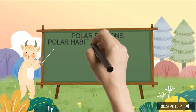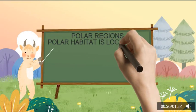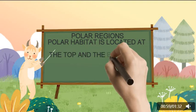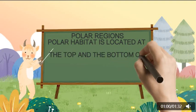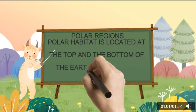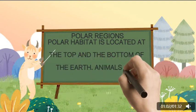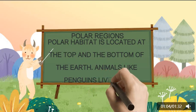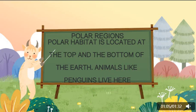Polar Regions: Polar habitat is located at the top and bottom of the earth. Animals like penguins live here.